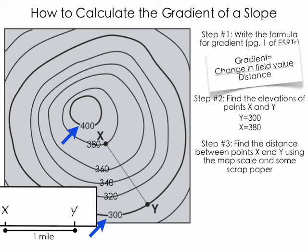So now we have all the numbers we need, and we can plug them simply into the formula. So the distance is one mile. The elevation of Y is 300, and the elevation of X is 380. So if we plug them in, we get gradient equals 380 minus 300. That would be the change in field value, divided by the distance between X and Y, which is equal to one mile. Then we go to our calculator and figure it out, and the gradient becomes equal to 80 units per mile.